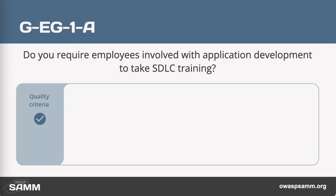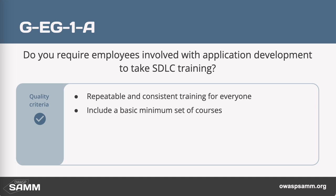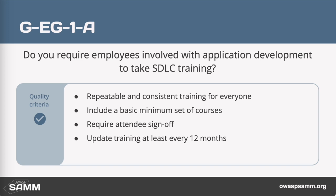At the first maturity level, the question is: do you require training? The quality criteria here are that the training needs to be consistent, readily available, and regularly updated. Basic ideas of good security hygiene in software should be provided to everyone regularly. And you must also make sure that new staff is getting it as well, so you need to require that training during onboarding — very important.